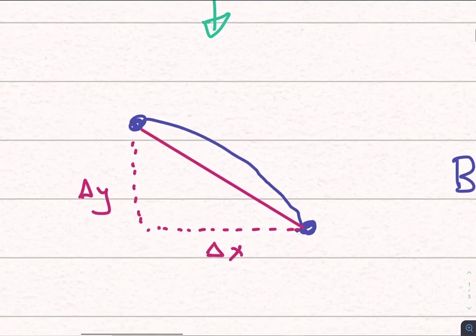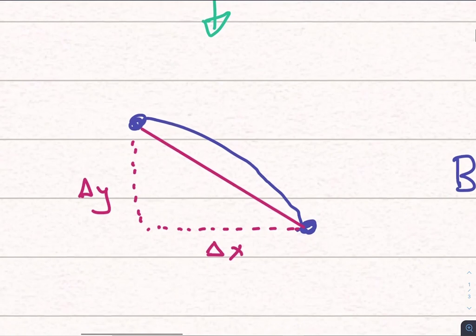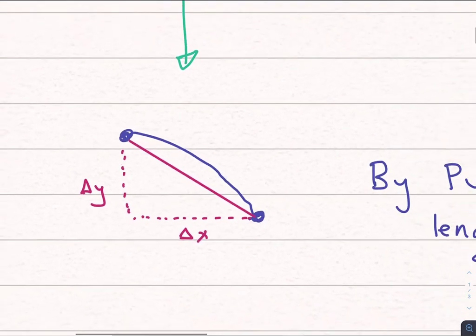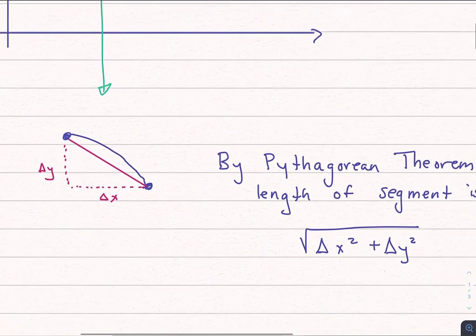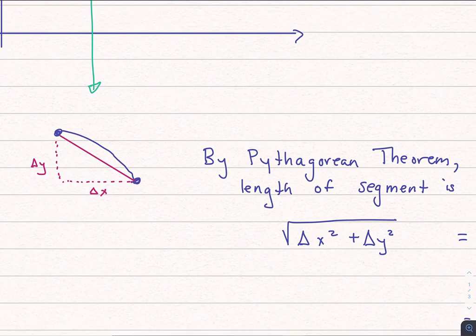If I'm trying to find the length of that, well, it looks like a hypotenuse of a triangle, I'm going to be able to use Pythagorean theorem with my delta x and the delta y. And basically, the length of that segment is simply delta x squared plus delta y squared and the square root of that.